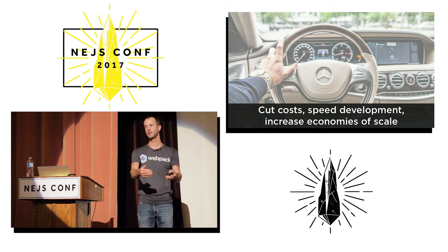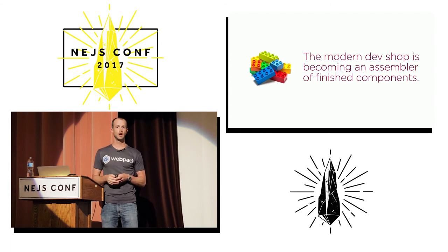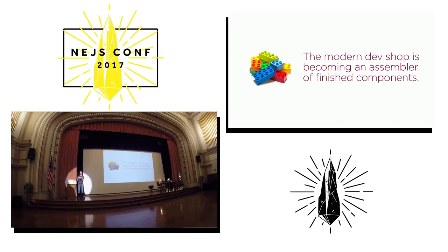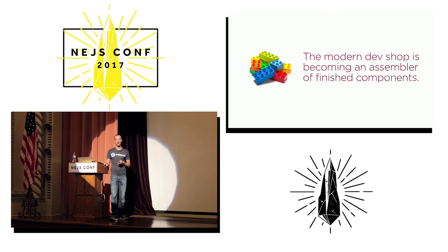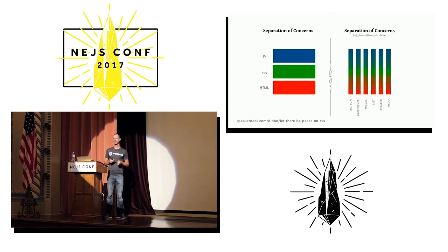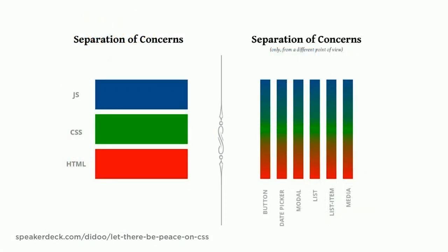We should be working with higher and higher levels of abstraction, with better components as time goes on. I believe the future of development is assembling finished components and putting them together in novel ways — thinking of ourselves as working with Lego pieces rather than building the Legos ourselves. This is the important mindset shift: separation of concerns today is a matter of components. I want to separate my concern of a button from a date picker from a modal dialog — the component is the concern we're separating.